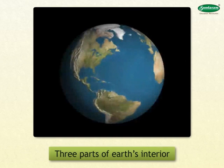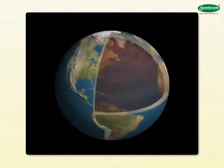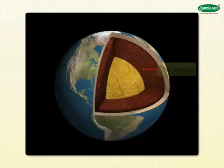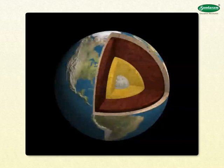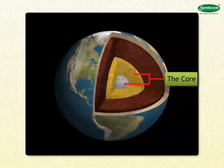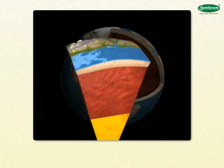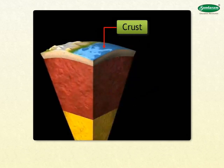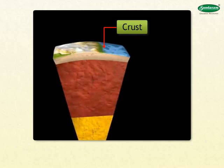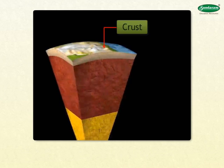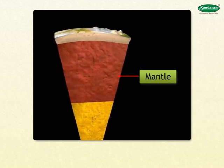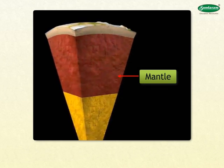We can divide the earth's interior into three parts: one, the crust; two, the mantle; three, the core. The crust is the outermost layer of earth and it is made up of solid rocks. Below the crust is the mantle.